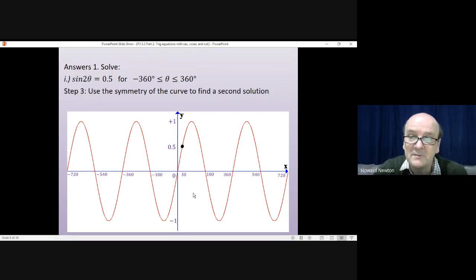Step 3 is using the symmetry of the curve to find the second solution. Now, sine and cosine, they are symmetric around every single maximum and every single minimum. A vertical line through every maximum, a vertical line through every minimum would be a line of symmetry. And you can see that by looking at it. Now, what we want to find is the value here. What angle here would give us sine 2θ of 0.5. Well, the distance from 0 to the point is 30 degrees. If the thing is perfectly symmetrical, the distance backwards from 180 will also be 30 degrees. So this point here will be 30 degrees back from 180 using symmetry. So that's the second solution. First one's at 30. The second one's at 30 before 180.